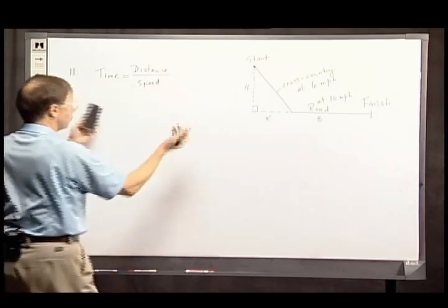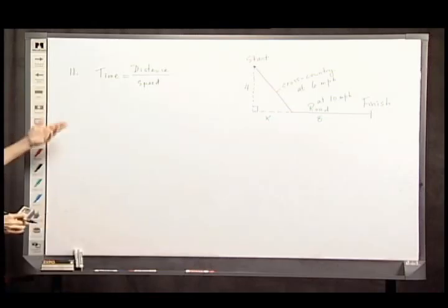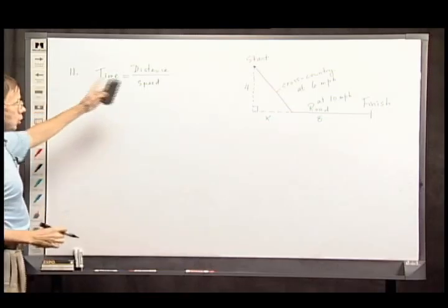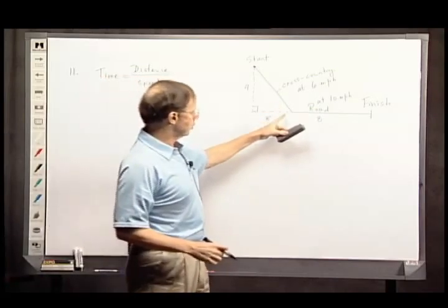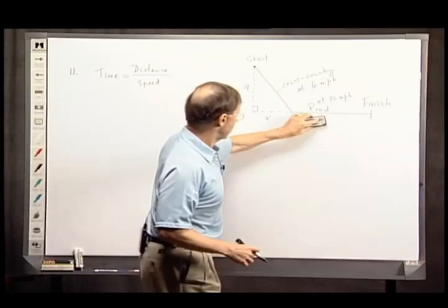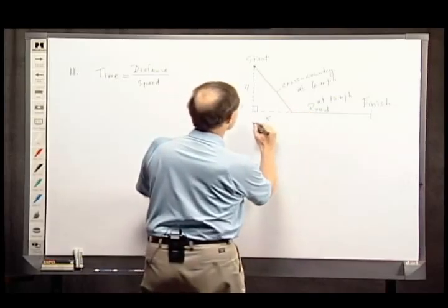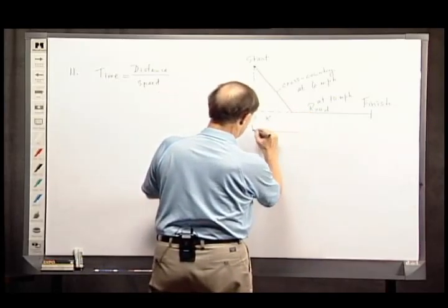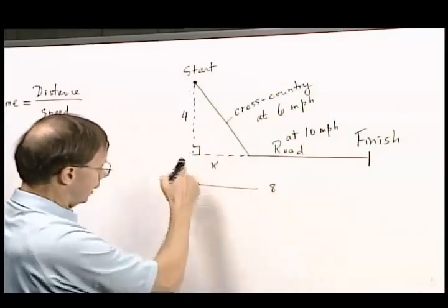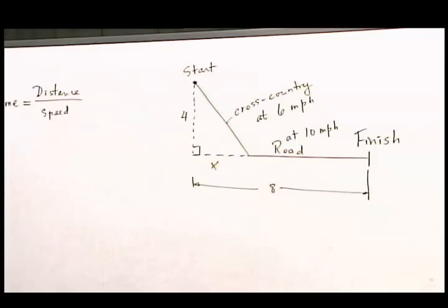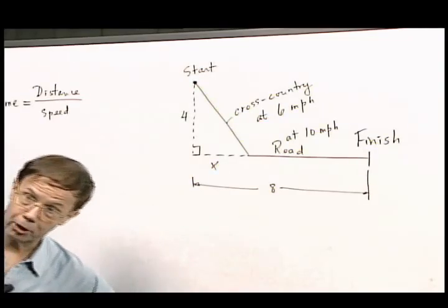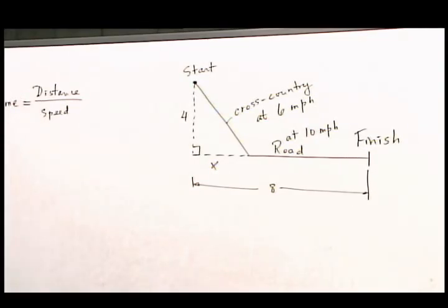There's a certain amount of time associated with the cross-country piece and a certain amount of time committed to the road. This 8 stands for the total distance from this line to the finish. So let's figure out how long the pieces are.